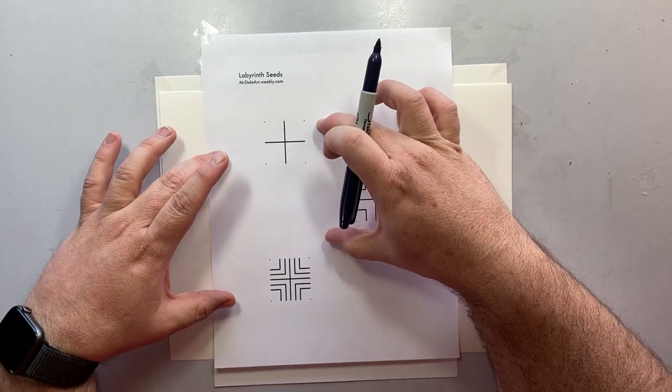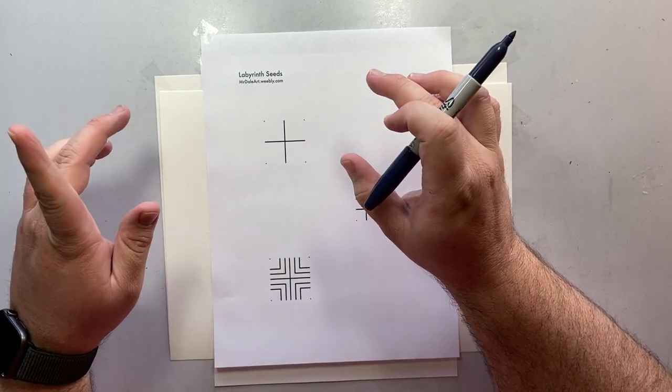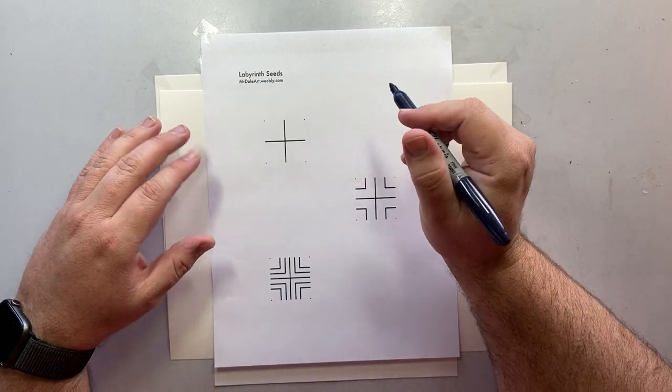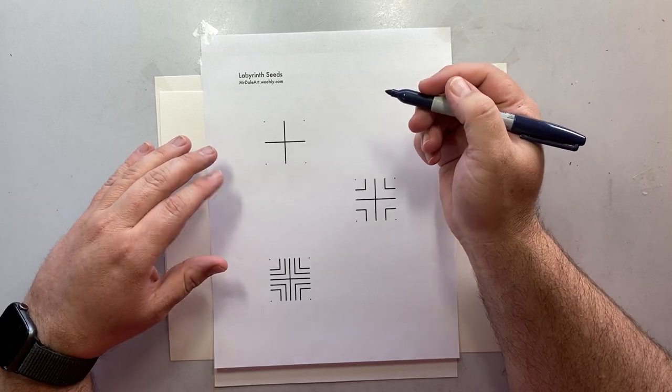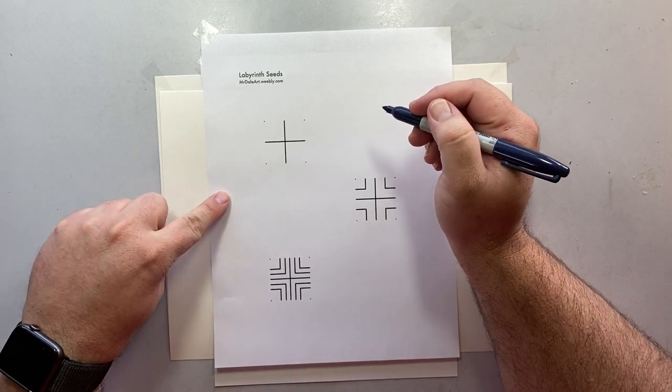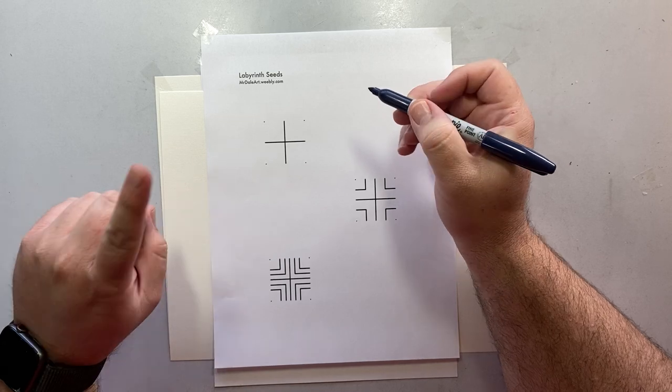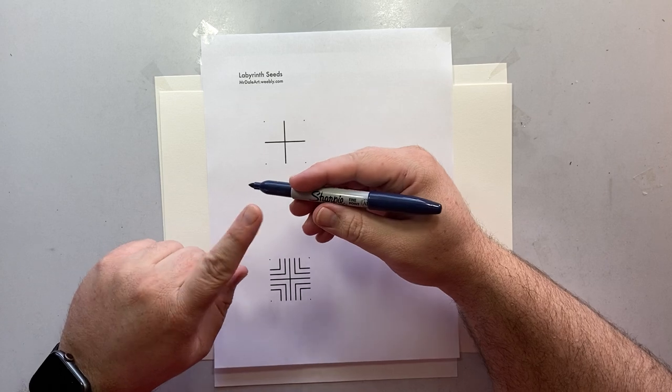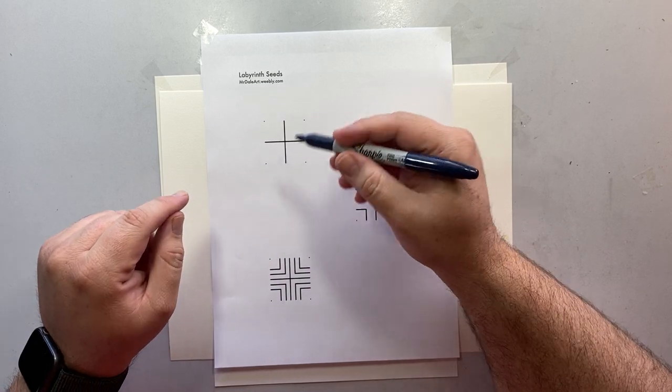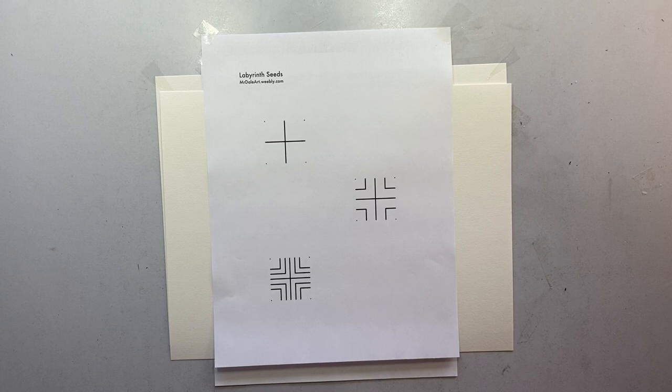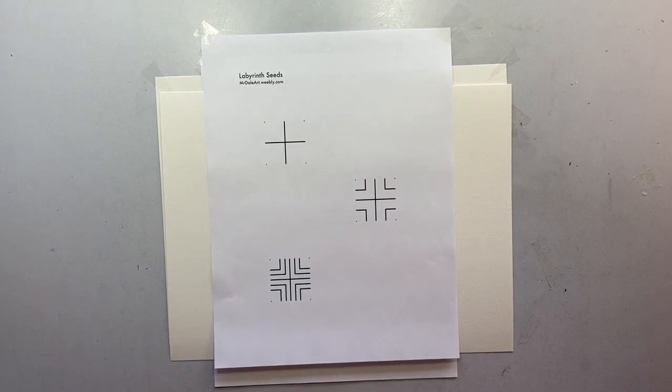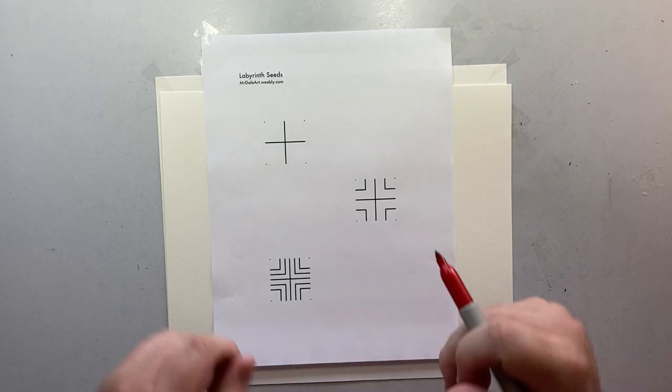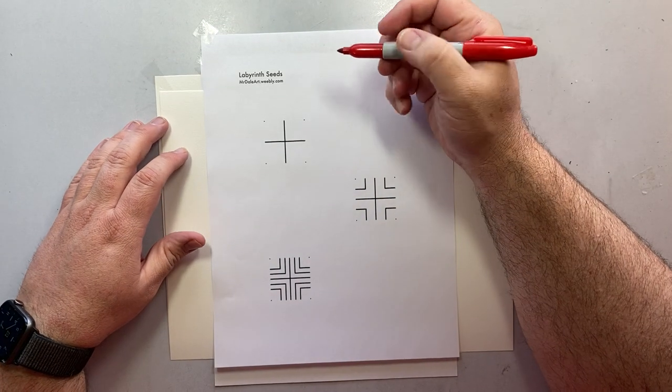The easiest one, the one that we're going to start with, is a simple plus sign or a cross and there's a dot in the four corners. So if you don't have a way to print it off, you can draw this labyrinth seed on a piece of paper. This is going to be our practice and then we're going to draw one on paper and you're going to design your own.